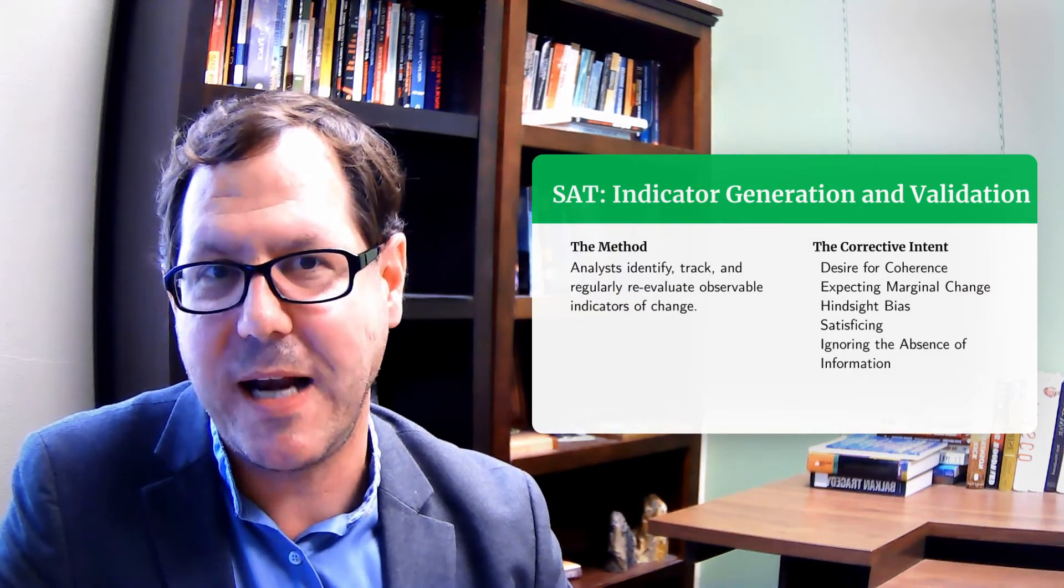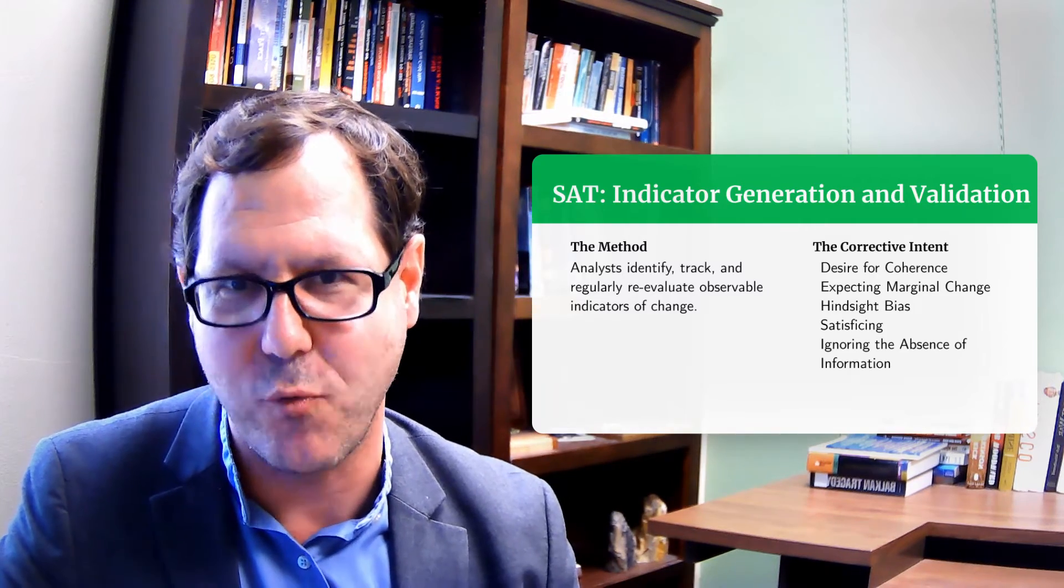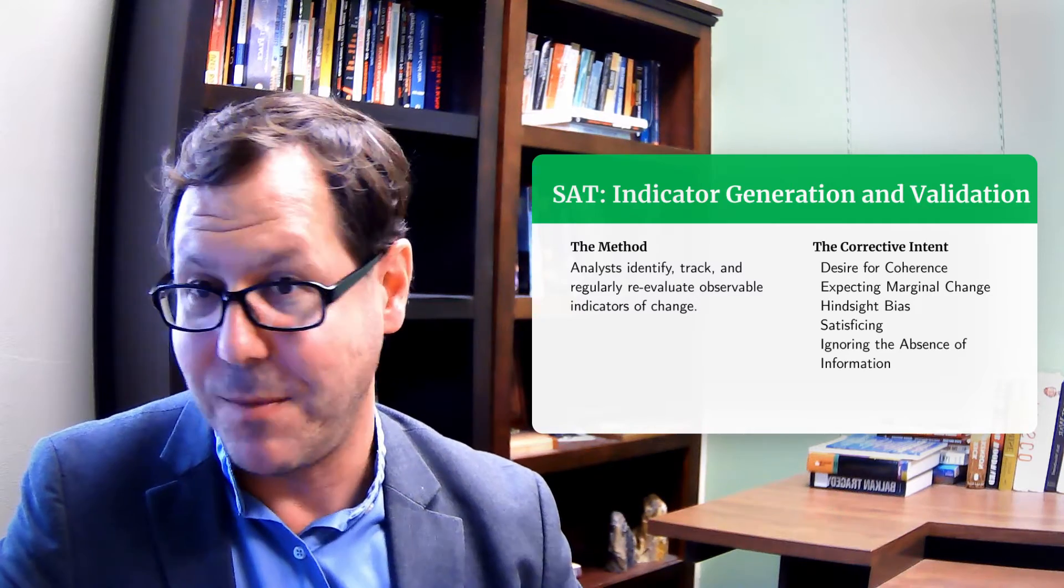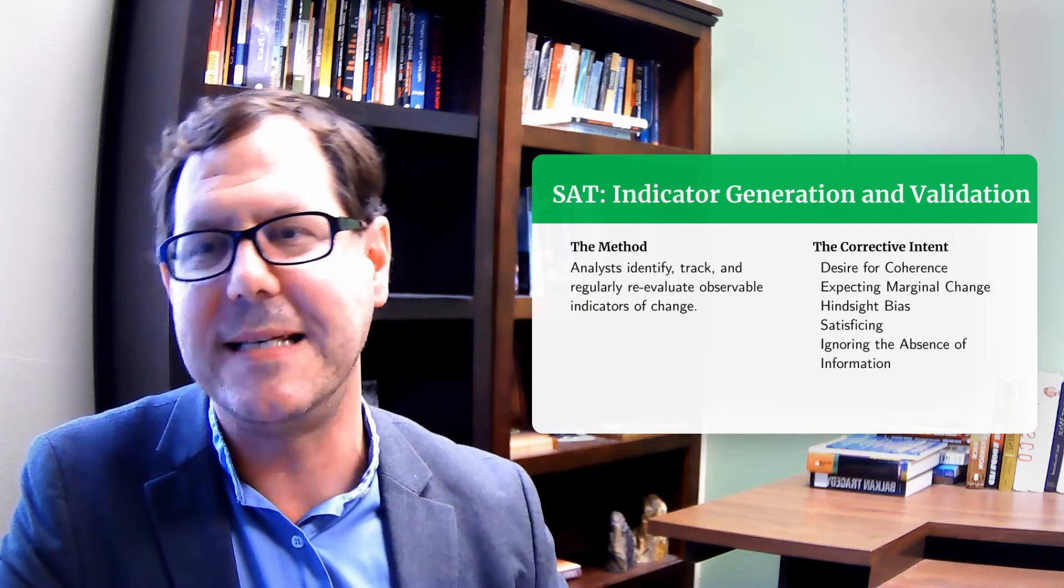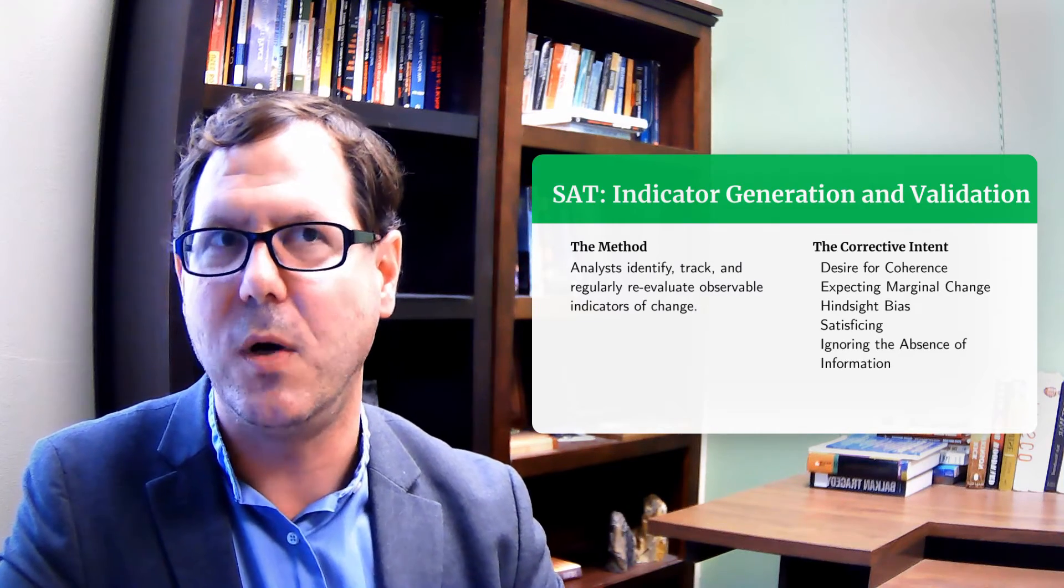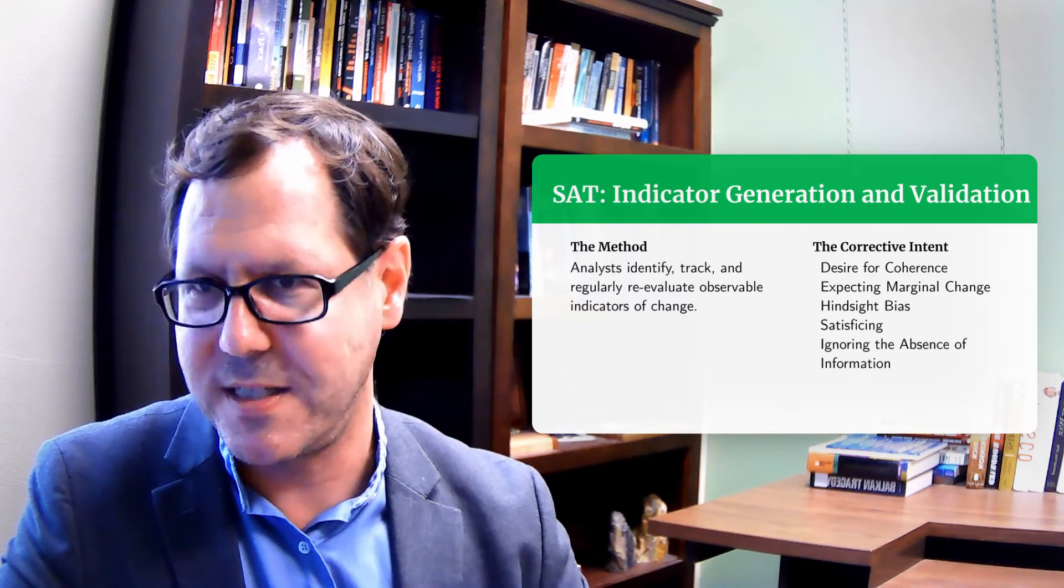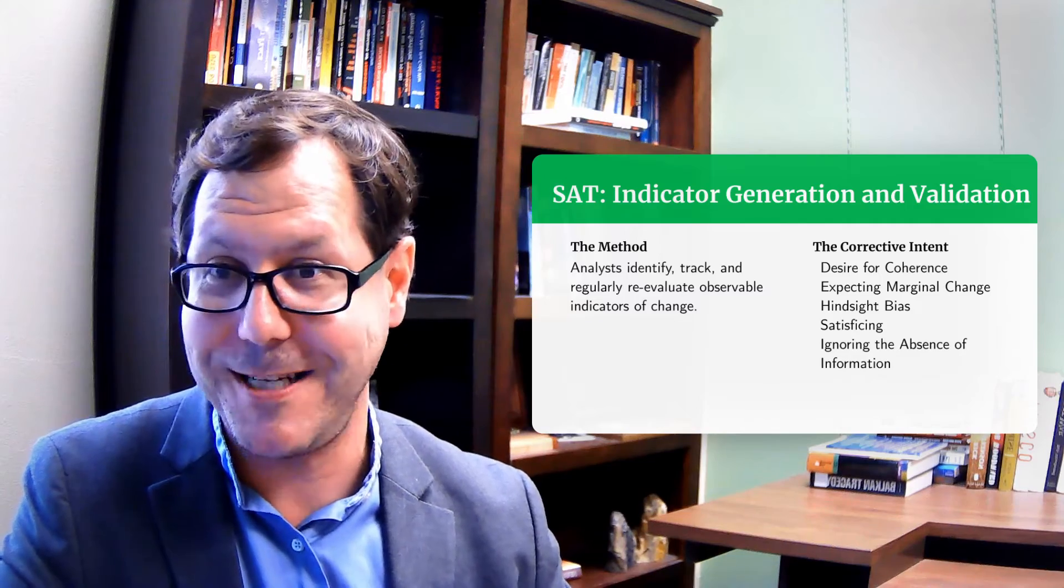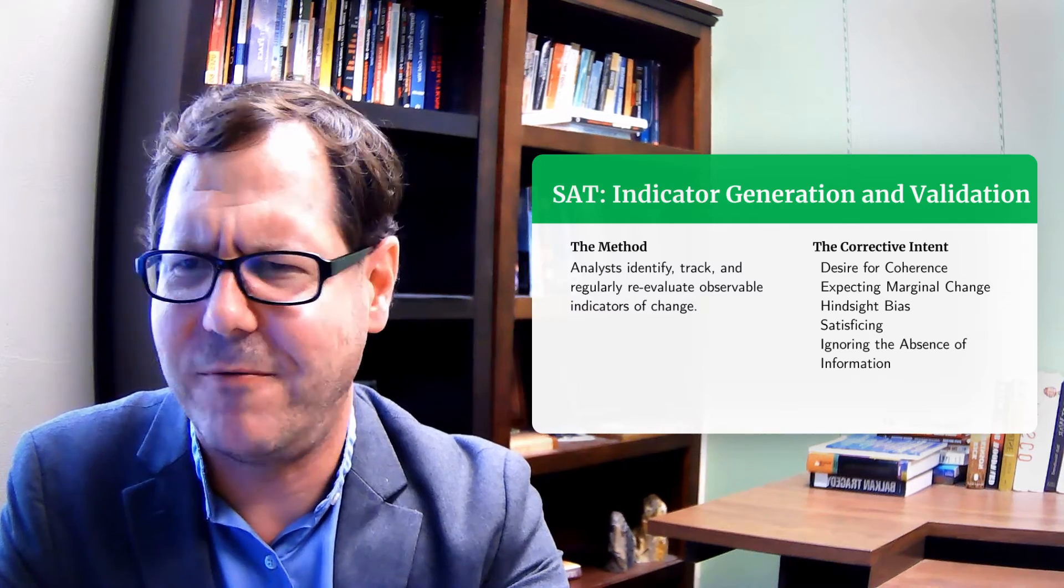Then we have indicator generation and validation. That's what you'd be doing after identifying key assumptions you need to make sure are right. What are the things you can track and observe? Indicators that might change over time that would tell you if you continue to be right or things are shifting. Simply identifying and thinking about indicators you want to track can force us to build a complete mental model about how everything works together and recognize when assumptions are not right.